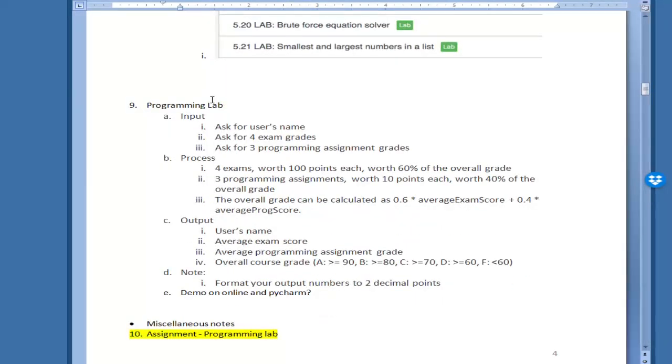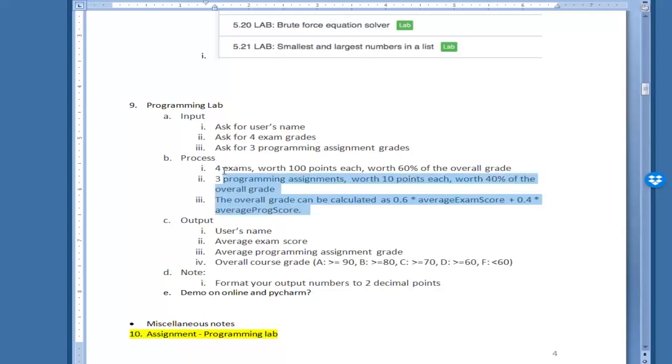Lastly, I'd like you to write a program. Input - ask the user for name and for exam grades. You need to ask them four times. Then ask for three programming assignment grades. You need to ask three more grades and assign them to a particular variable. I'd like you to figure out these things. For four exams, they're worth 100 points and they're worth 60% of the overall grade. Three programming grades will be worth 10 points each, and all of that put together will be worth 40% of the overall grade.